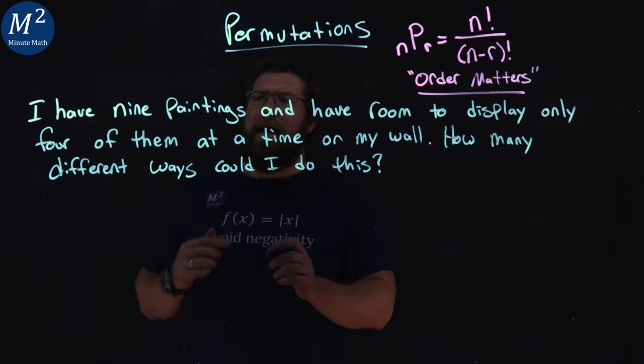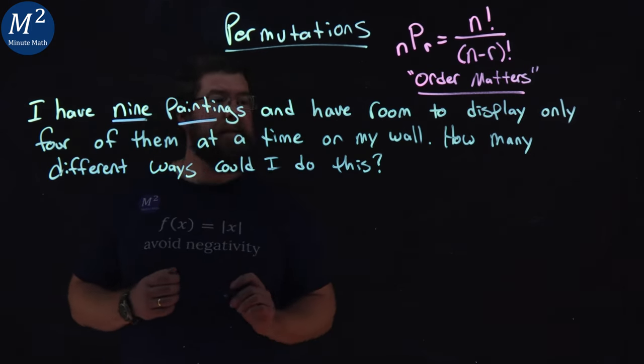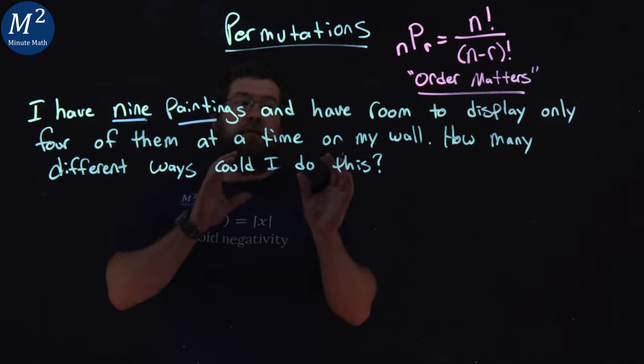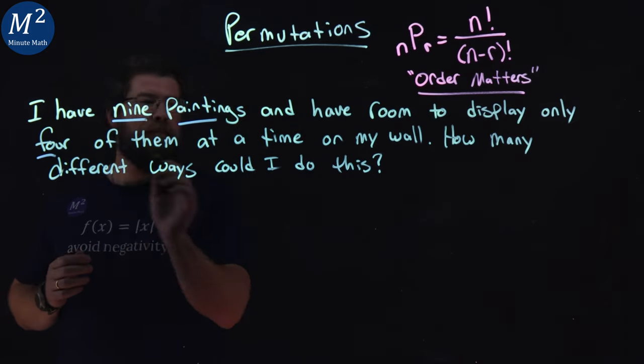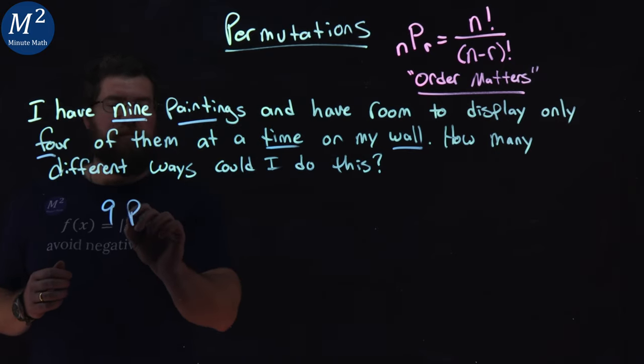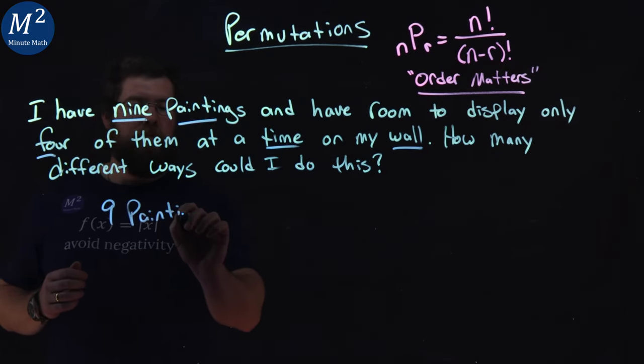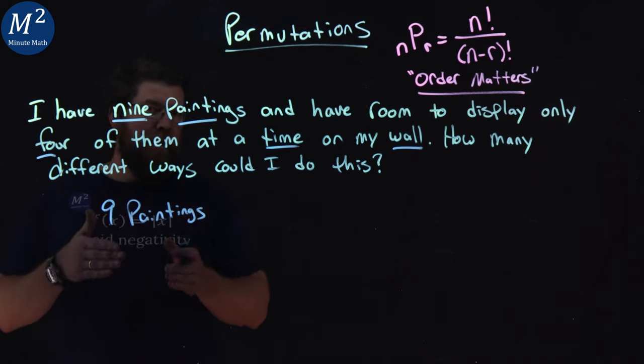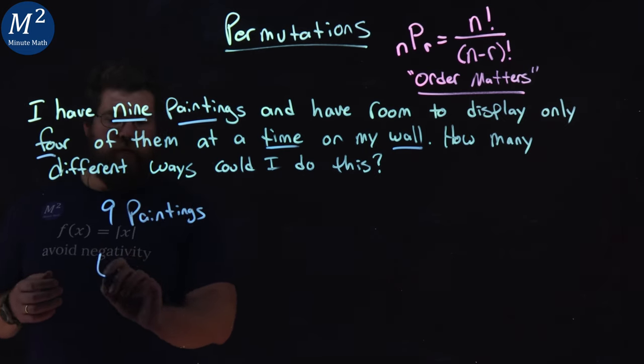So if we think about this, we have nine paintings and only four spots on the wall. So we have our nine paintings and they can adjust between our four spots.